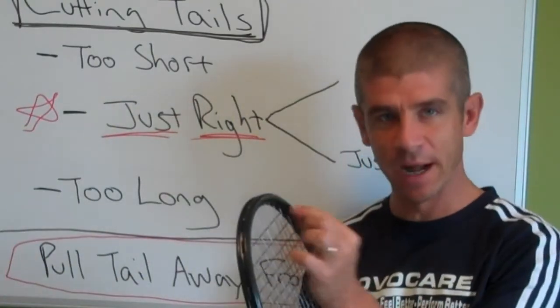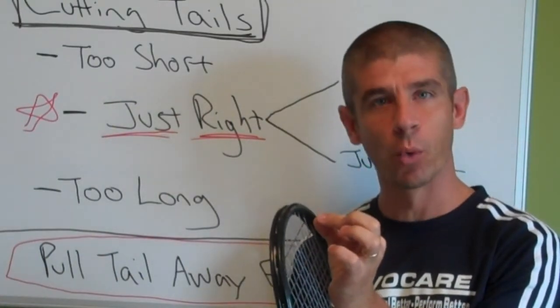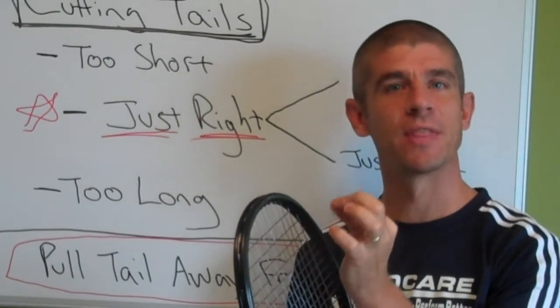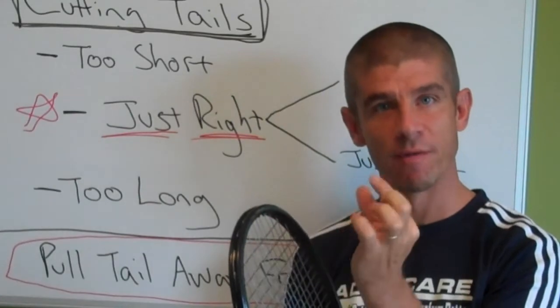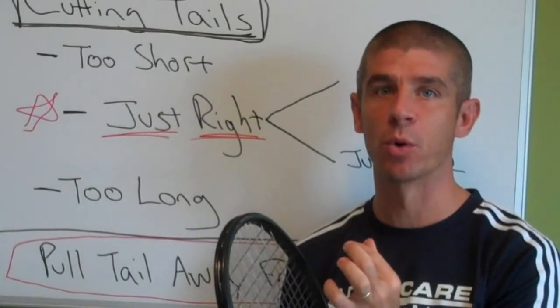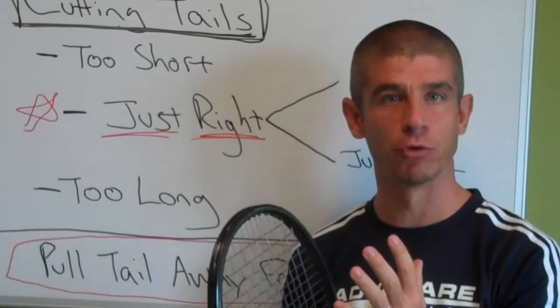The problems with too short. If you cut that tail too short then you have problems with the knot maybe not holding as well and even slipping through. If that tail is too short it can kind of slip through. So you definitely don't want to cut the tail too short.